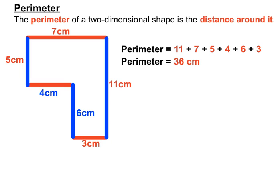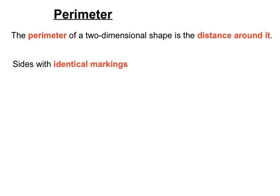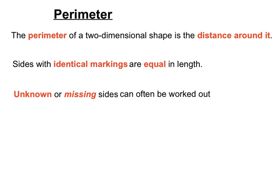To recap: the perimeter of a two-dimensional shape is the distance around it. Sides with identical geometrical markings are equal in length, and we can trust that. Unknown or missing sides can often be worked out by comparing sides in the same direction.